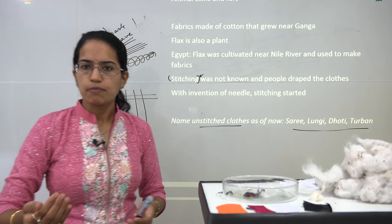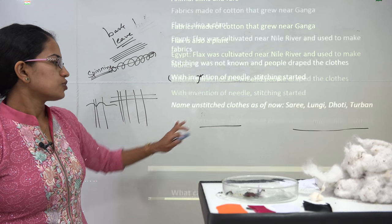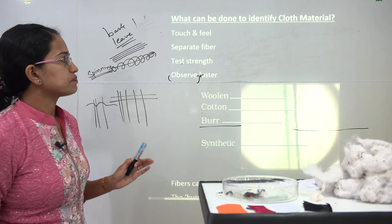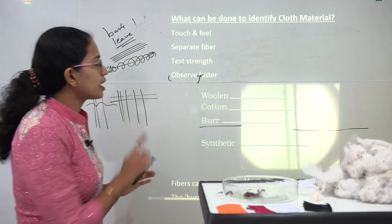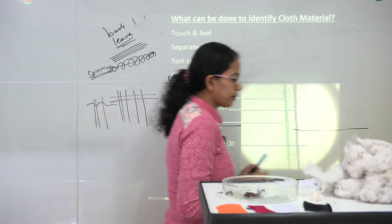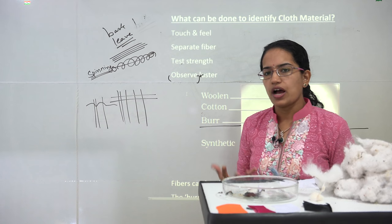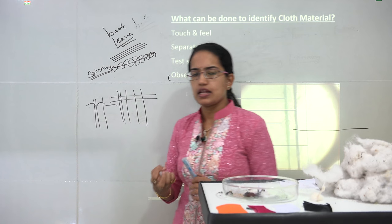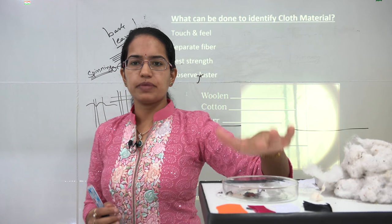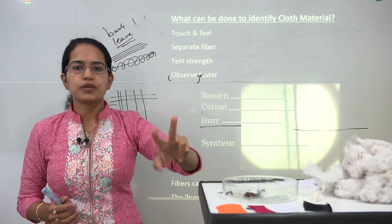Once stitching was discovered with the invention of the needle, various fabrics were prepared and stitched clothes replaced draped ones. However, even now in India we have numerous unstitched clothes — which of the following is an example of unstitched clothes is an important question to understand.